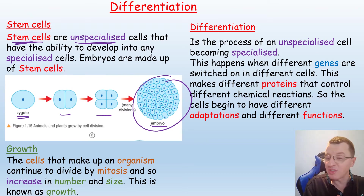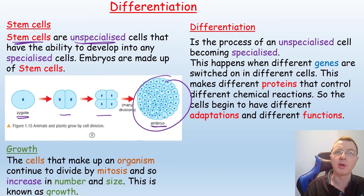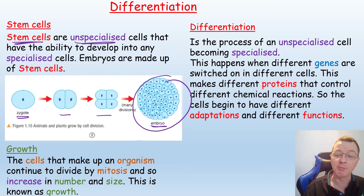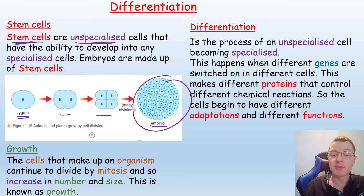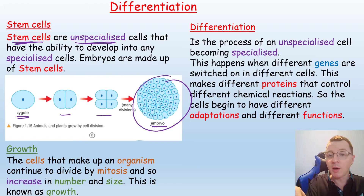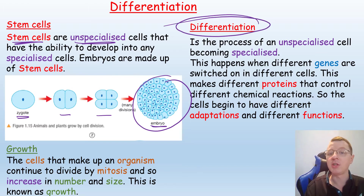There are around 216 different specialised cells in the human body that an embryonic stem cell could develop into. So how would these embryonic stem cells develop into these specialised cells? That process is known as differentiation.